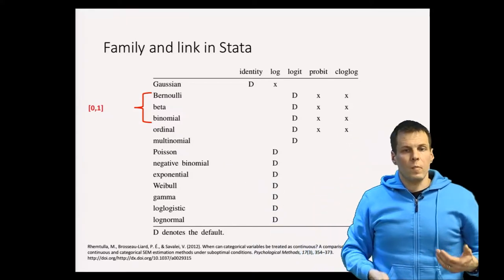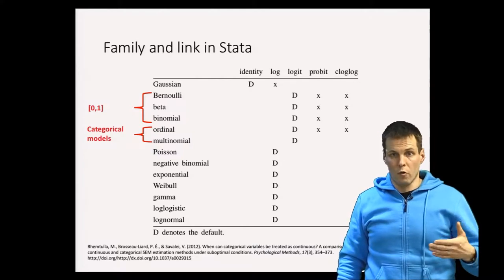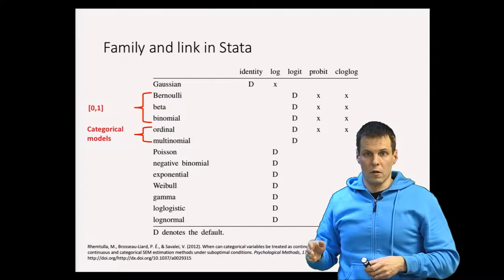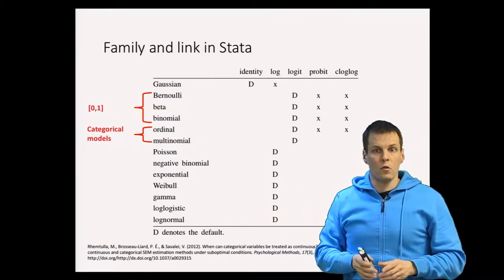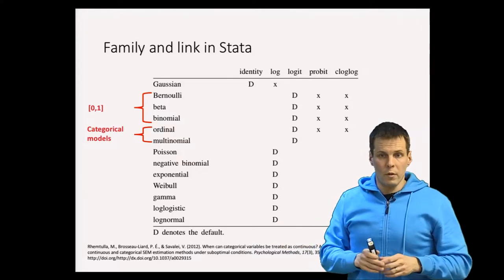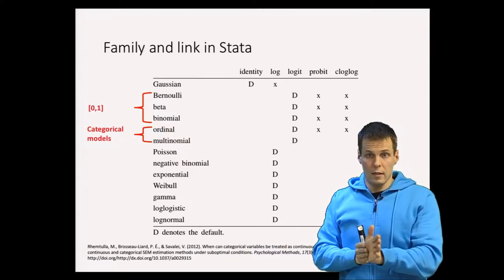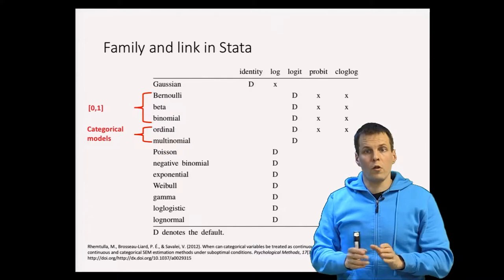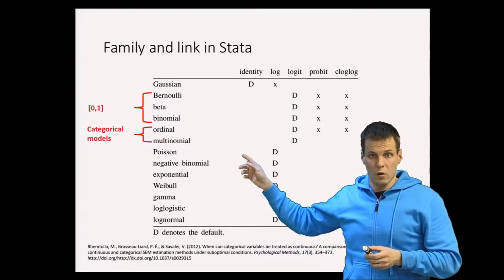Categorical models use ordinal or multinomial distributions. The ordinal distribution is for ordered categories — for example, tall, taller, and tallest. You know the order of those people, but you don't know how much taller one is than another. You only know the order, not the distances between observations.